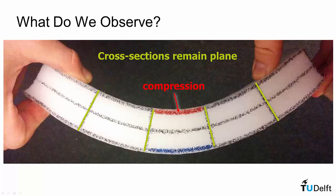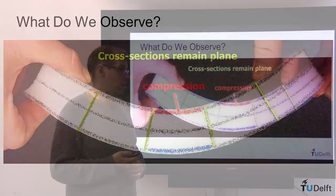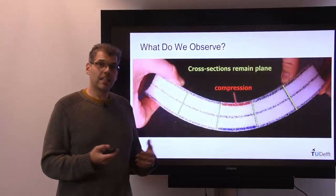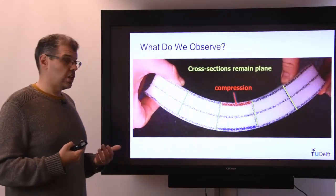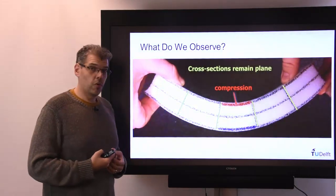Next observation we can make in this particular snapshot is that the red line seems to be compressed. It is on the concave curvature side, and it's compressed to form that curvature.